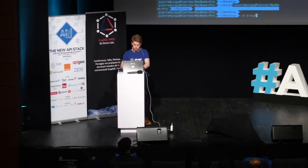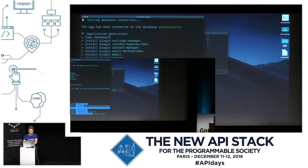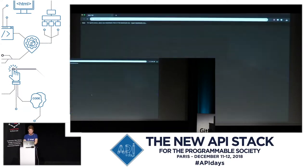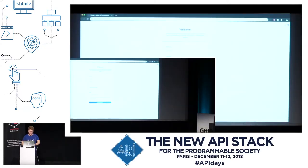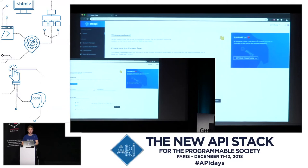I'm going to start the server. Strapi is based on Node.js, so we actually start a Node.js server, and it's opening in my browser. Like in WordPress, I'm going to create my first user with a password and an email address. And here is the admin panel of Strapi.